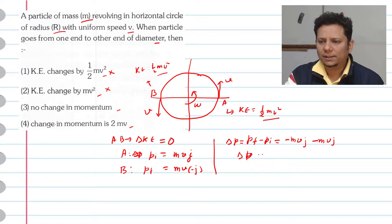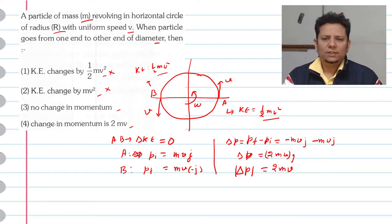So delta p value will be minus 2mv j direction. If you see just the magnitude, delta p magnitude will be equal to 2mv. So based on this, option number 4 would be the right answer. So I hope the solution is clear.